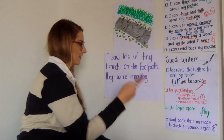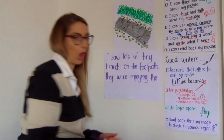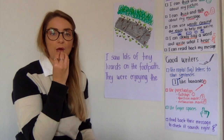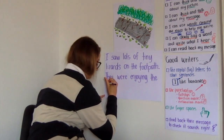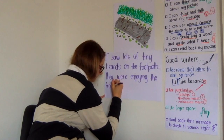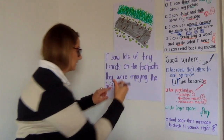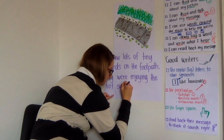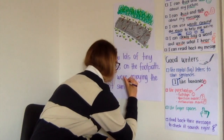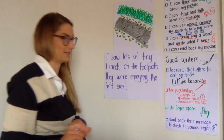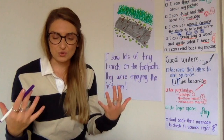They were enjoying the... oh, I've already written 'the' here, so I can copy it. The hot. I can stretch this one out — H-O-T. So I can hear H-O-T. They were enjoying the hot sun. I know how to write 'sun'. And I'm going to say that they were very excited to be laying in the sun, so I'm going to show the readers that by using an exclamation mark, because exclamation marks show the reader strong emotions.